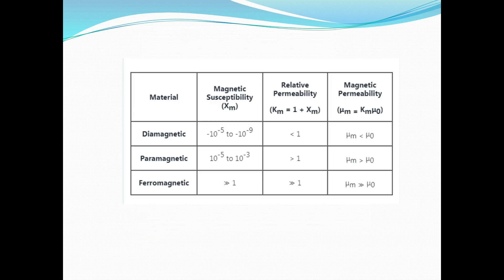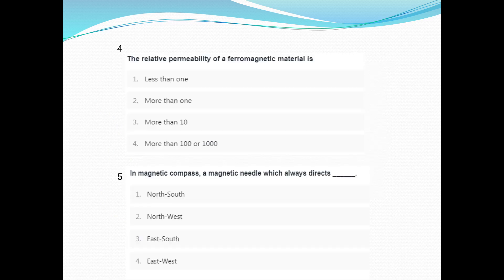Those are the properties. There are ranges: magnetic susceptibility is minus 10 raised to minus 5 to 10 raised to minus 9 for diamagnetic. Relative permeability is greater than 1. For ferromagnetic materials, the relative permeability is more than 100 — about 1000.